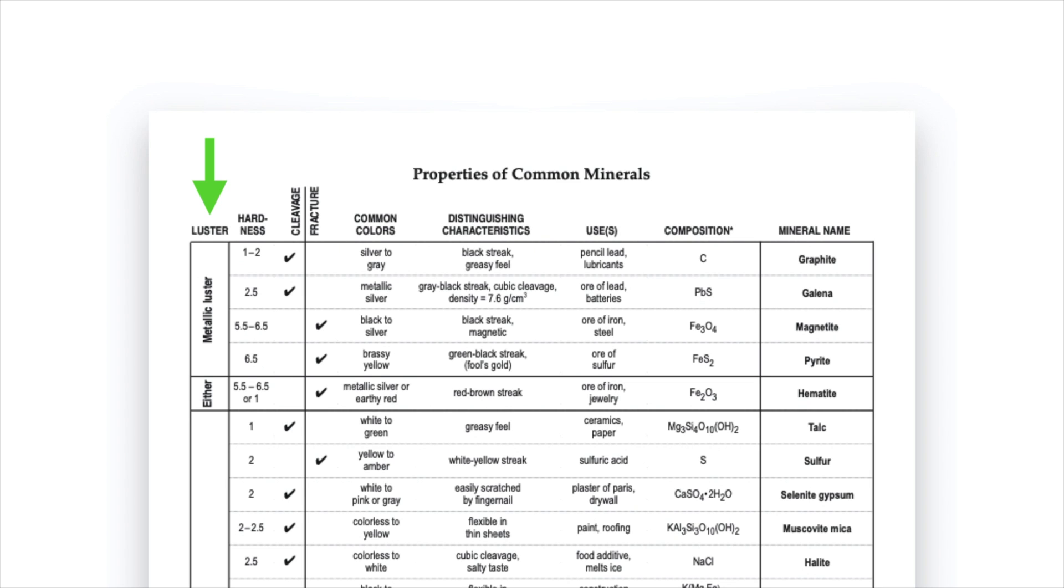But I'll give you a quick recap now. Luster is the way in which light reflects off the surface of a mineral. And while there are a variety of types of luster the two main ones are metallic which would be minerals that basically appear like a chunk of metal, gold or silver, and then non-metallic.